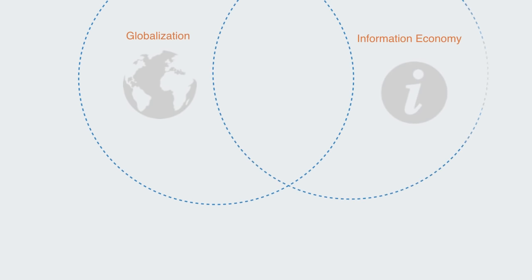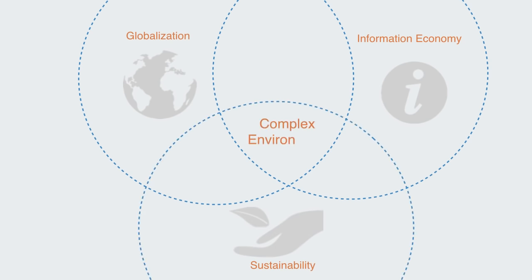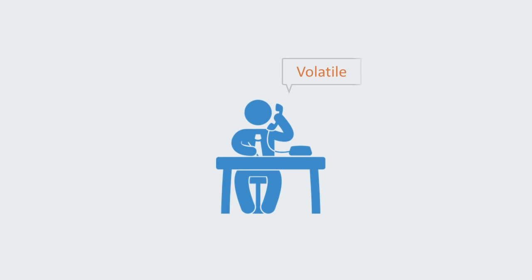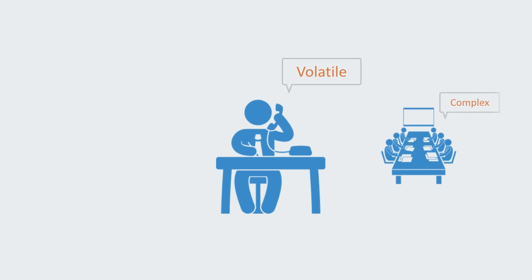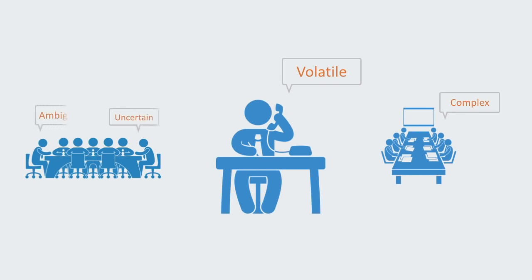As we've been talking about in past lectures, the rapid growth of globalization, information technology, and a changing environmental context are all working to take us into a much more complex world. This world is interconnected, interdependent, non-linear, and more volatile. Over the past few decades, an acronym has emerged within the business community to define the fundamental internal and external conditions that affect organizations within this complex environment.